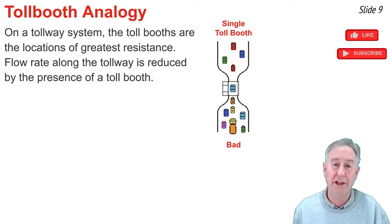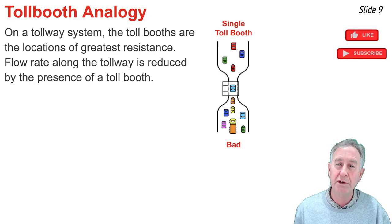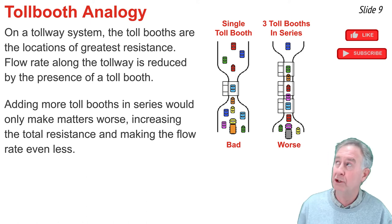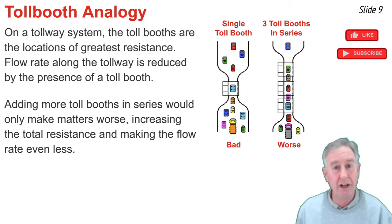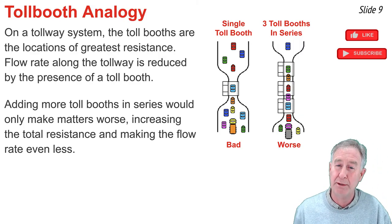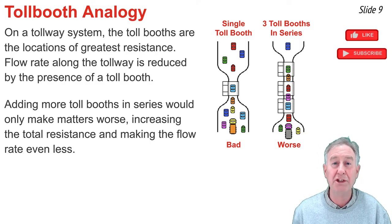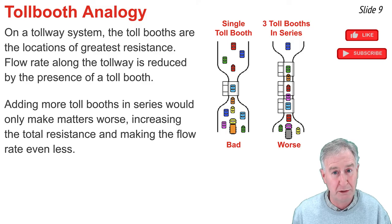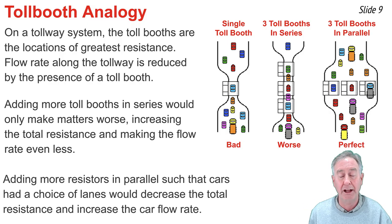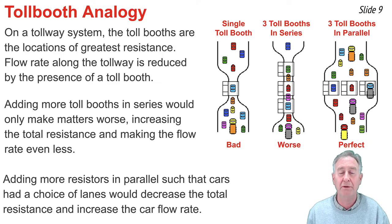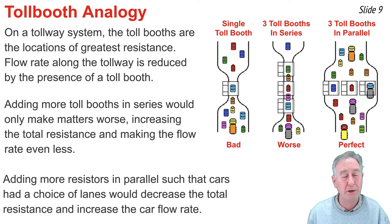On a tollway system, it's the tollbooths that act as the resistors — the bottleneck that reduces the flow of cars through the entire system. If you add more tollbooths in series, that would make matters worse: more tollbooths in that fashion increases overall resistance and decreases the flow rate. But if you arrange your tollbooths in parallel — placing each tollbooth in its own separate path and giving drivers their choice of which pathway to use — then you have the effect of decreasing the overall resistance and increasing the flow rate of cars on the tollway system.